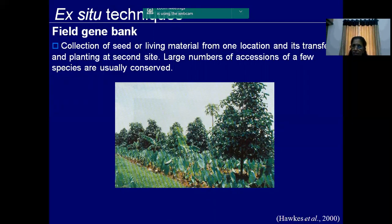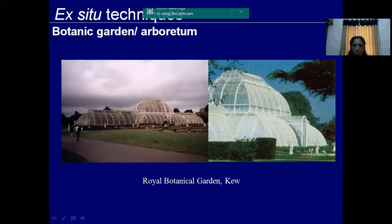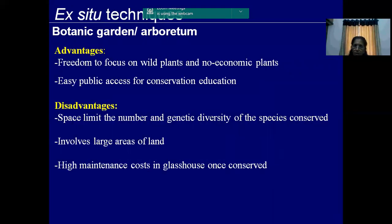Next is our field gene bank, where all the crops are grown in our field itself. This is taro, also called Colocasia esculenta, and these are the Garcinia species conserved in our farm. This is a botanical garden - all the crops can be seen directly, and we can educate children and visitors by showing the crops and explaining the different types of plants. The disadvantage is that germplasm will be prone to all sorts of diseases, it requires a larger area, and it requires larger maintenance.